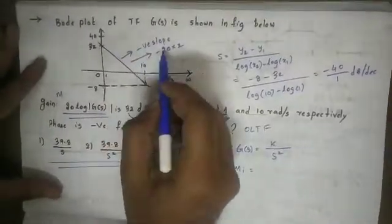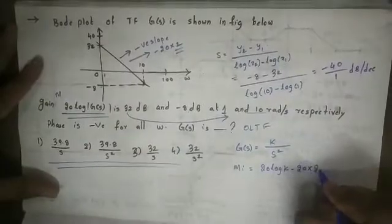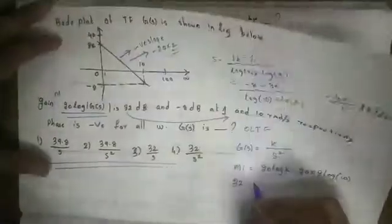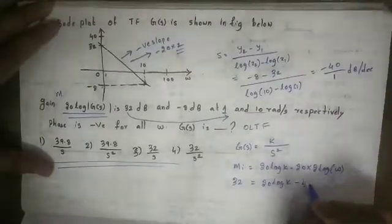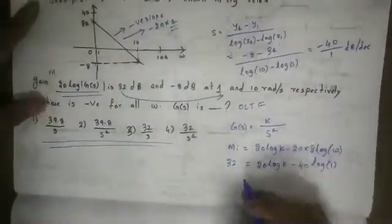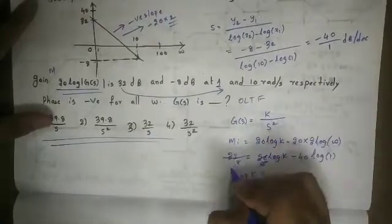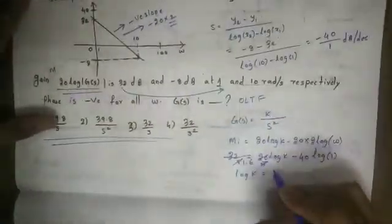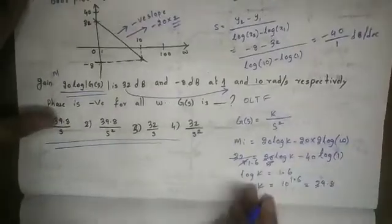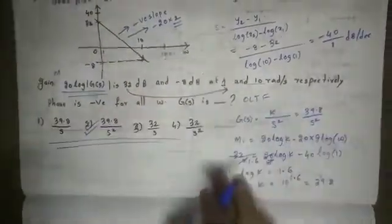With 2 poles at origin, the initial magnitude formula is 20 log K minus 40 times log omega. Substituting the point at omega equals 1: 32 equals 20 log K minus 40 times log 1, and log 1 is 0. So 20 log K equals 32, giving log K equals 32 divided by 20, which is approximately 1.6. Therefore K equals 10 to the power 1.6, which is approximately 39.8. So G(s) equals 39.8 divided by s squared — the second option is correct.